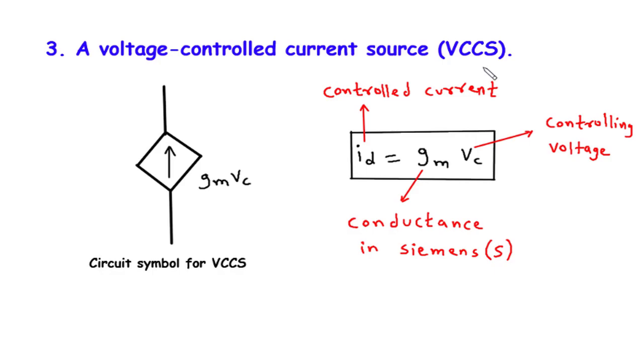When we analyze or design electronic circuits, VCCS symbols and their behavior are crucial. The VCCS circuit symbol typically consists of an arrow representing the direction of current flow, with a voltage source connected to it. This symbol helps us identify and understand the presence of a VCCS in a circuit diagram.